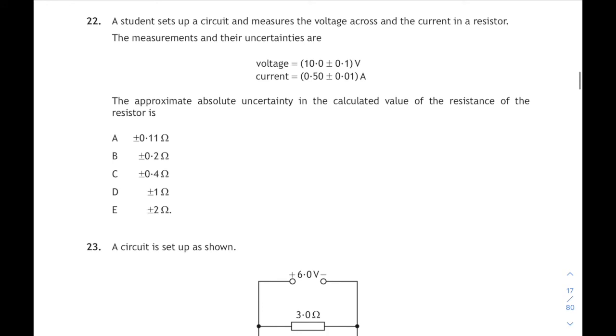22 is an uncertainties question. A student sets up a circuit and measures current and voltage. We have to work out the absolute uncertainty in their calculated value of resistance. Before we do that, I would always work out my uncertainties as percentages. So the uncertainty in the voltage is 0.1 divided by 10 times 100 is a 1% uncertainty. For the current, it will be 0.01 divided by 0.5 times 100 is a 2% uncertainty. And 2% is bigger than 1%. So whatever our value of resistance is, it will have a 2% uncertainty in it.